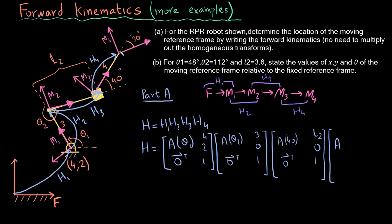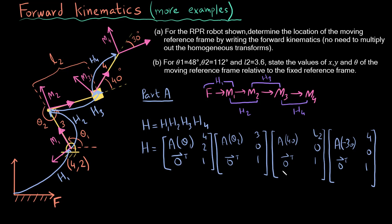For H4, going from M3 to the final frame, the x-axis requires a rotation of 330 degrees — or equivalently, since counterclockwise is positive, −30 degrees. So H4 has rotation −30 degrees, zero transpose, and displacement [4, 0, 1] in x. This is the answer to Part 1.